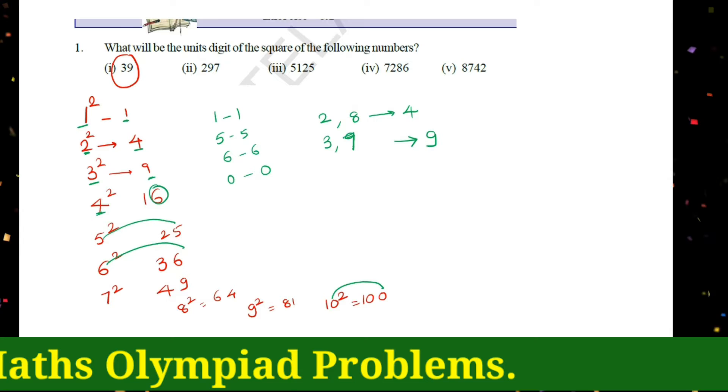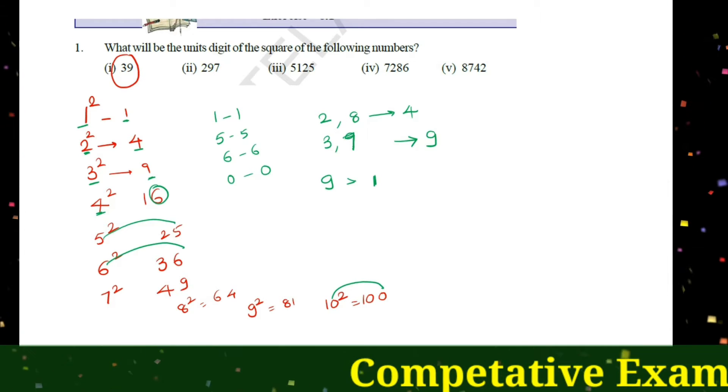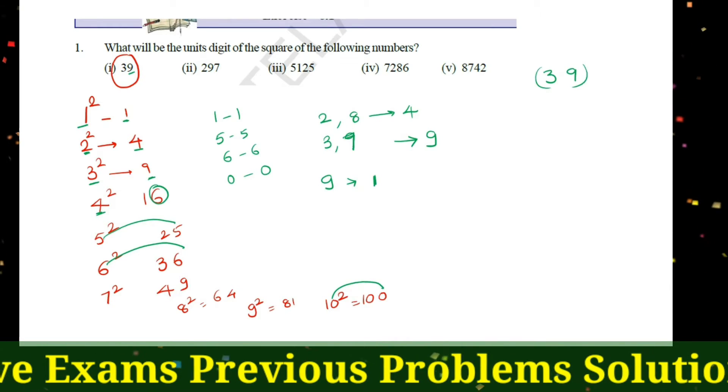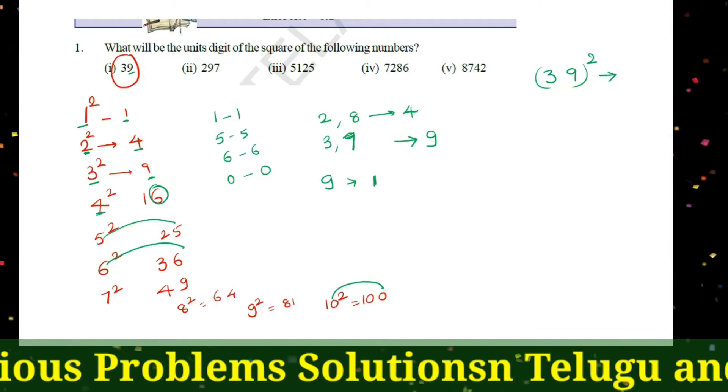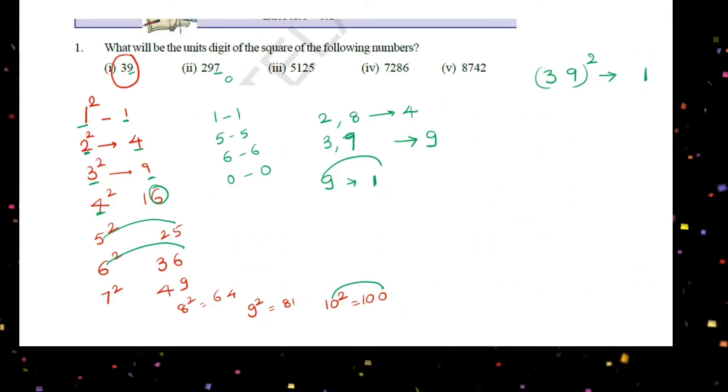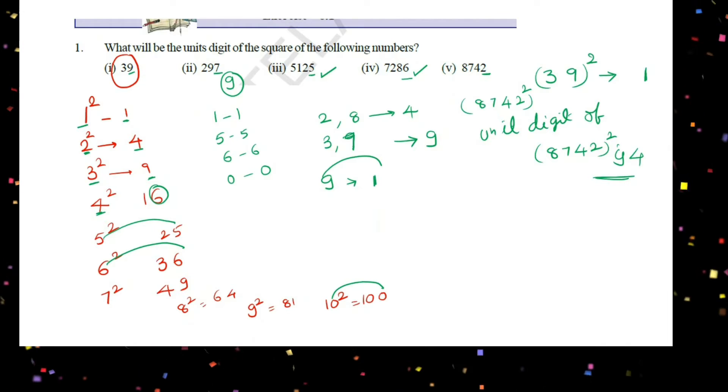Now for the first question, the number is 9. So 9 is equal to 1, so answer is 1. Next is 7, which gives 9. Next is 5 is equal to 5, 6 is equal to 6, and 2 is equal to 4. So 8742 square number unit digit is 4. This is the answer.